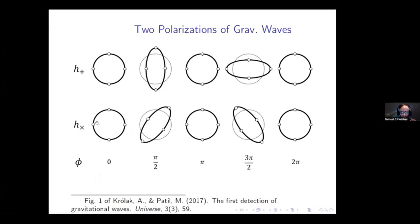The second polarization for gravitational waves has the same sort of effect, but the orientation of the motion is at a 45-degree angle. So roughly speaking, if you want a mental image for the effects of gravitational waves on test particles, you can imagine a sort of wobbling oscillation, almost as if the test particles were on the edges of a rubber ball being compressed in one direction and another.